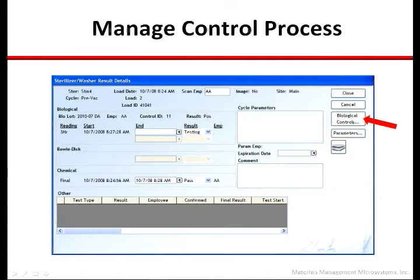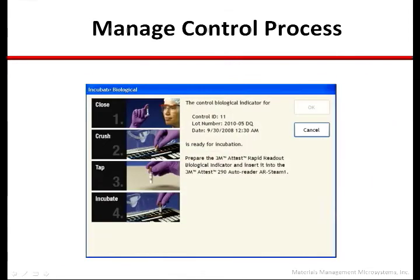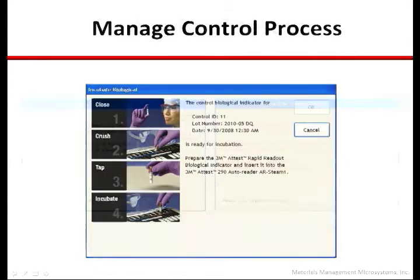Further, the system will correlate test BI lot number to ensure spore viability and will provide prompts and disciplines based on recommended practices and instructions for use. Instructions for use for control BIs will be provided with a prompt to place the control into an available well in the same auto-reader. If the control is inadvertently placed in the wrong auto-reader, it will be detected as such and the technician will be guided through the correction sequence until the situation is resolved. If everything is in order, the system will confirm that the process will be completed pending results.